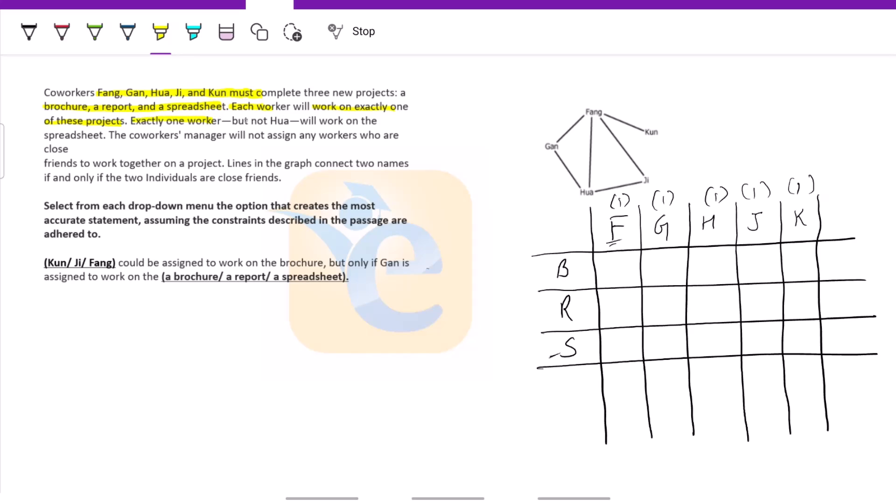Second statement is exactly one worker, but not W, will work on the spreadsheet. So for the spreadsheet row, there will be just one tick and this will definitely not be W. So these are our boundary conditions. The coworkers manager will not assign workers who are close friends to work together on a project. How do we know who are close friends? Lines in the graph connect two names if and only if the two individuals are close friends.